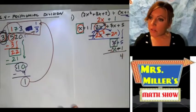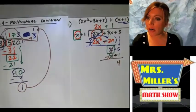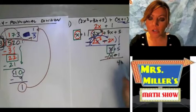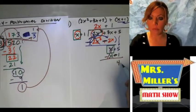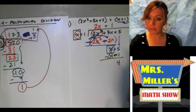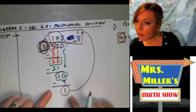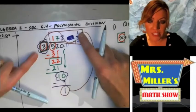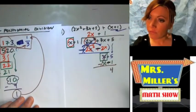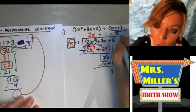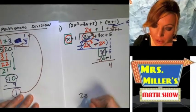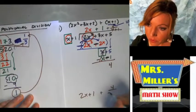Can somebody tell me what the remainder should look like? Taylor: 4 over x plus 1. Good — it's a positive 4, so it's plus 4 over x plus 1. That's our overall answer. Everybody give it up for Taylor. Let me stop there and ask if you all have questions.